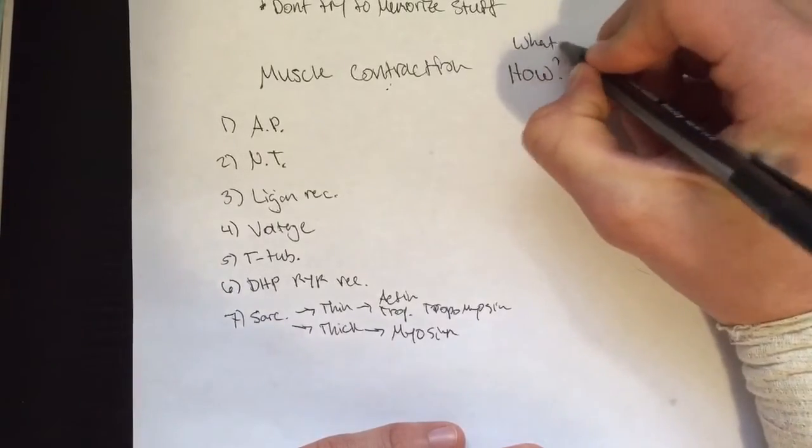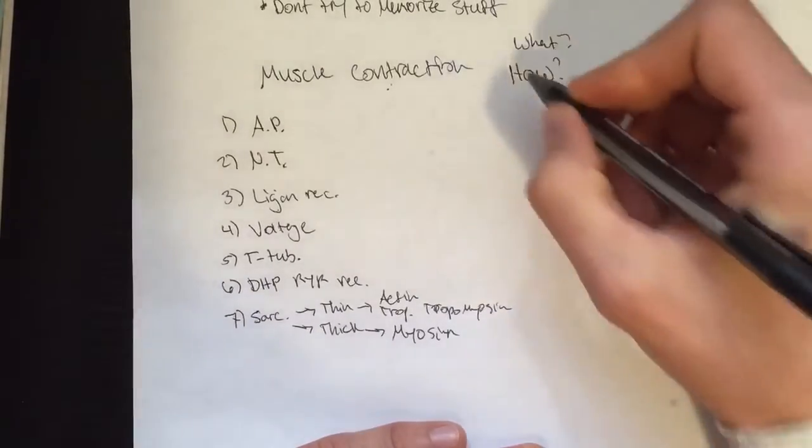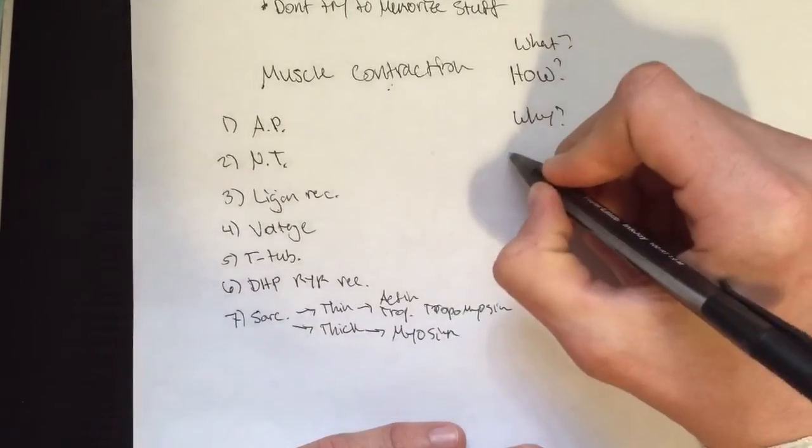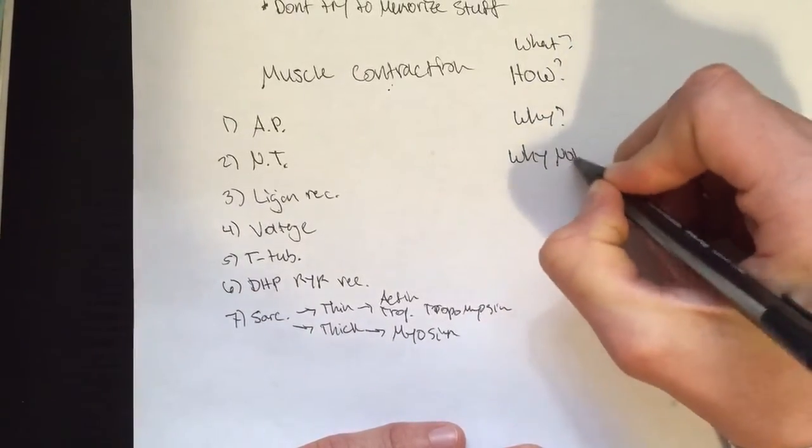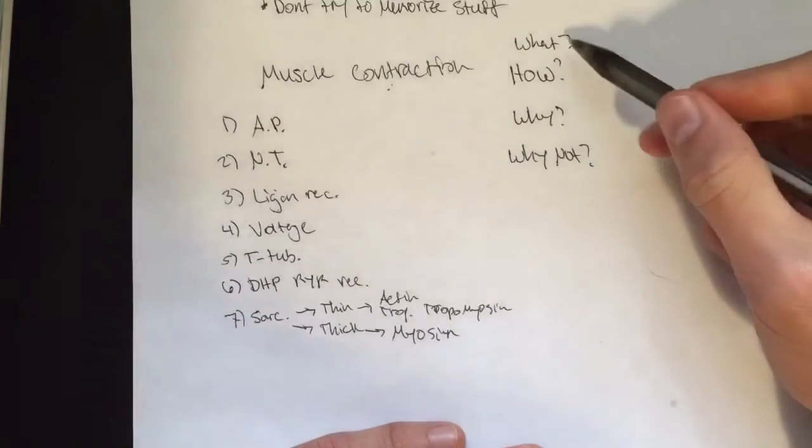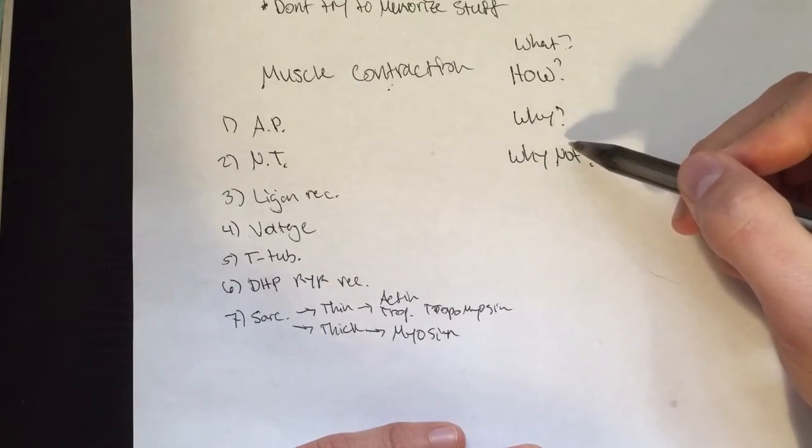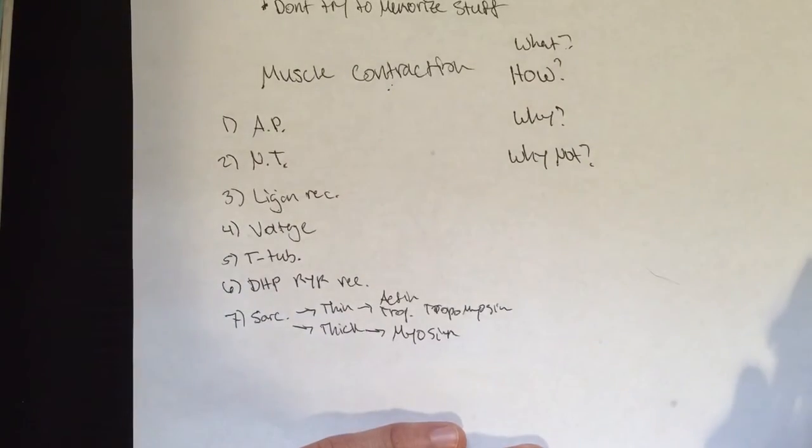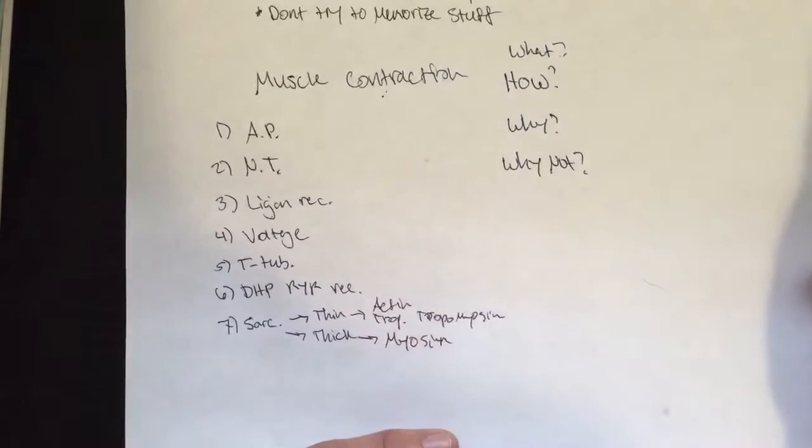People will sometimes ask: how is this happening, what is this thing, what is muscle contraction, how does it happen, why is it happening, and then the grand question of why not. If you can answer these four questions about anything in life, you have a very good understanding of what's going on.